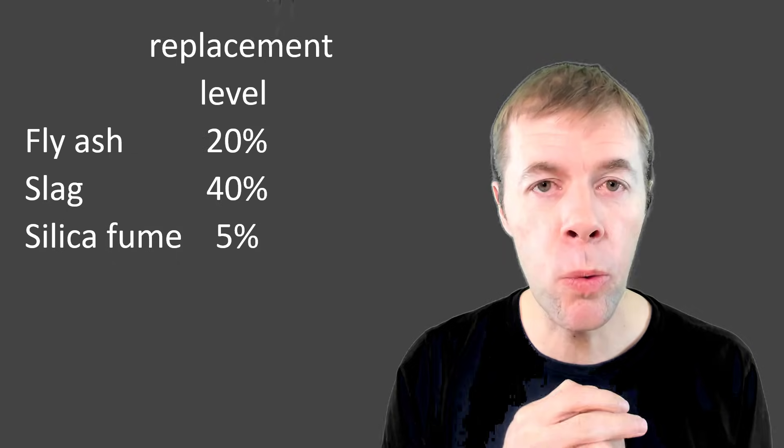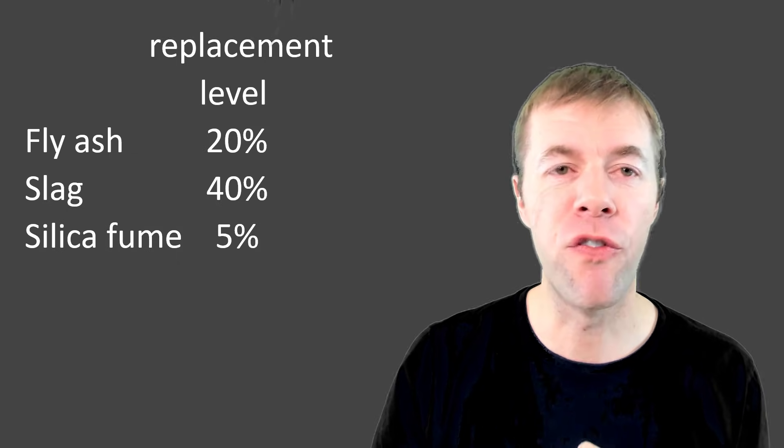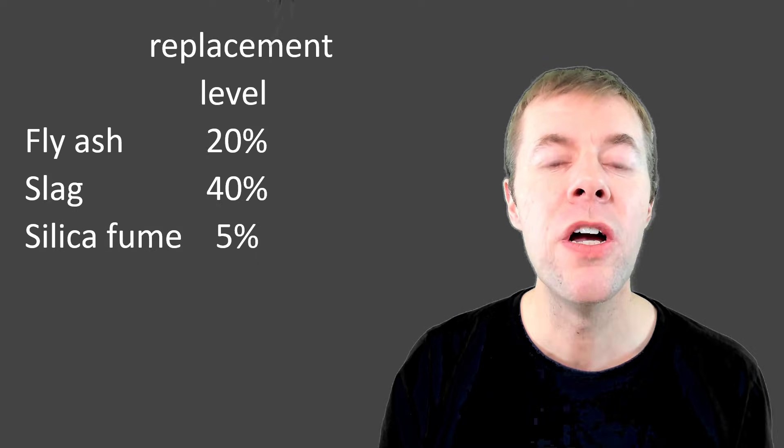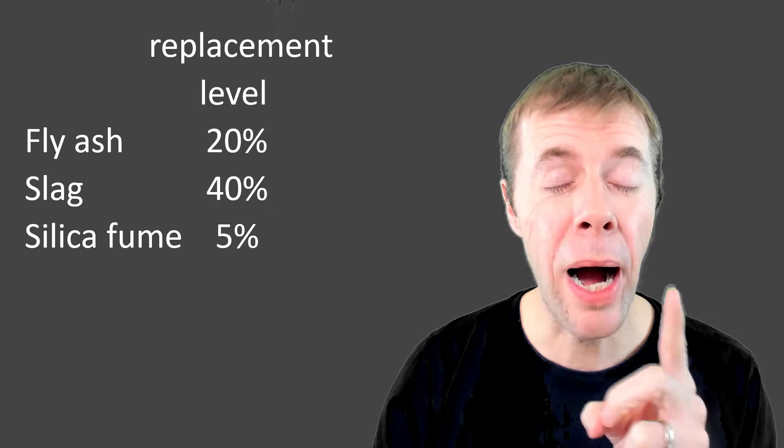The replacement levels you probably want to use for fly ash is about 20 percent. For slag you can use up to 40 percent and for silica fume you're usually capped at about 5 percent. All of these are by mass.